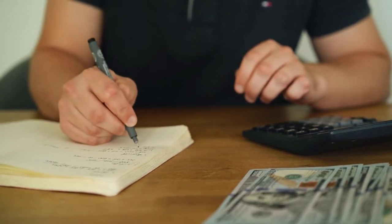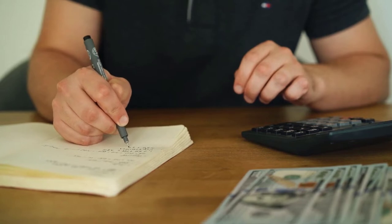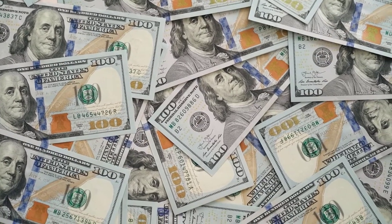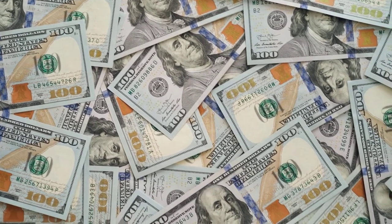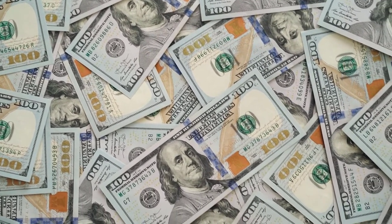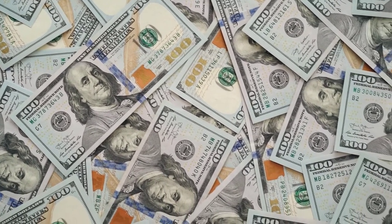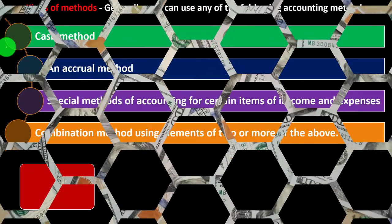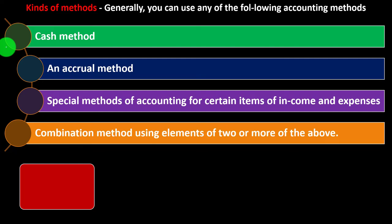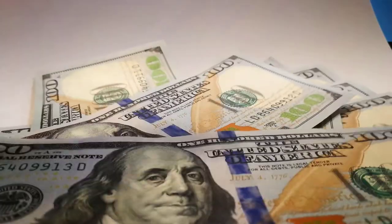Even if you're on a cash method, there are certain things you have to deviate from cash to report on. For example, you might have to report equipment as depreciable — putting it on the books as an asset and depreciating it, rather than expensing it when you pay cash for it. With the accrual method, we often have adjusting entries to move things from more of a cash basis to an accrual basis. You could use cash for the purchasing/expense side and accrual for the income side.